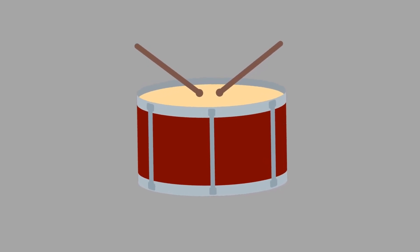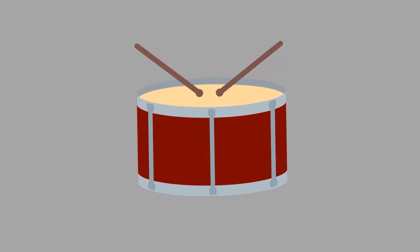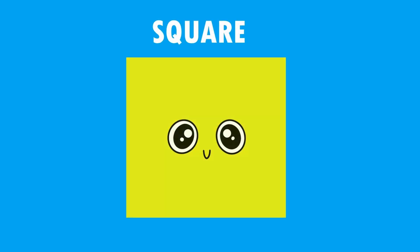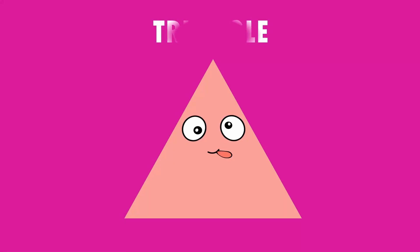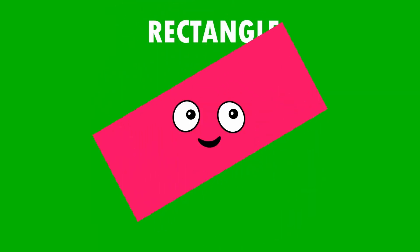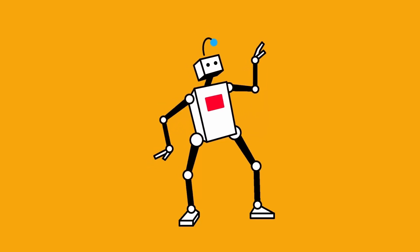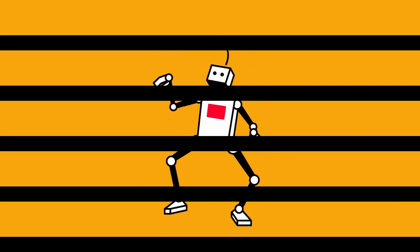We know our shapes. We know our shapes. And we're going to name them. Are you ready? Here we go. Square. Circle. Triangle. Rectangle. Now it's your turn. Name these shapes.